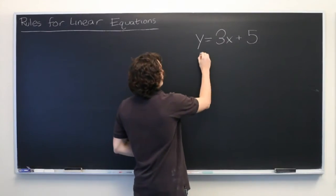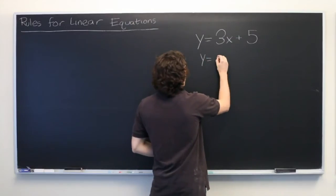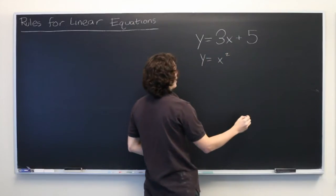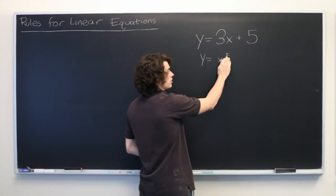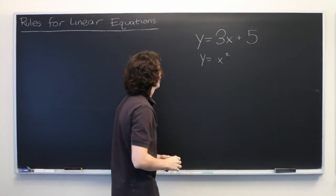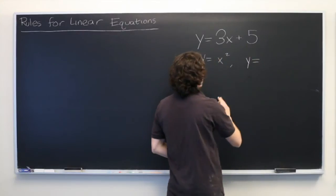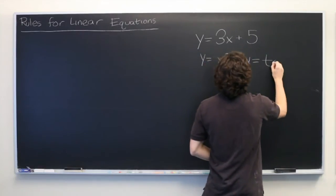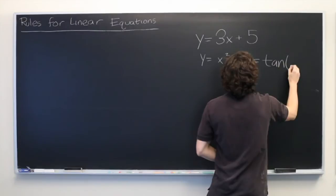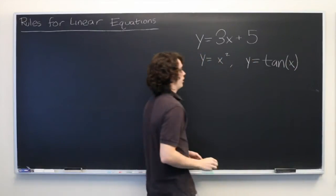We can't, for example, have something like y equals x squared because this is a power greater than 1. We also can't have any other type of function that manipulates an independent variable. We can't have a trigonometric function, for example. That's not linear either.